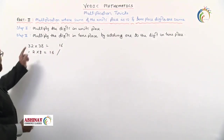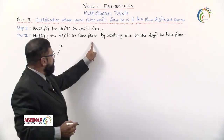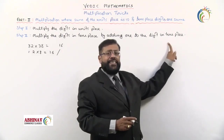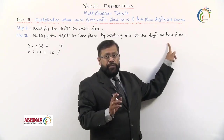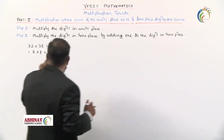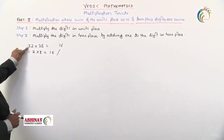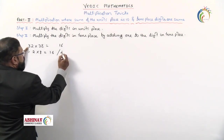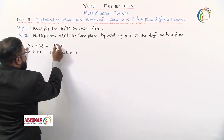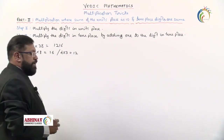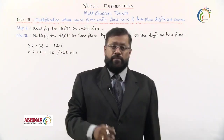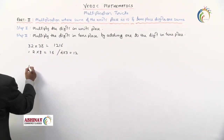Step 2: multiply the tens place digits, but first increase the tens digit by 1. The tens digit is 3; increasing by 1 gives 4. So 4 × 3 = 12. Write 12 on the left-hand side. So 32 × 38 = 1216. No calculator required!